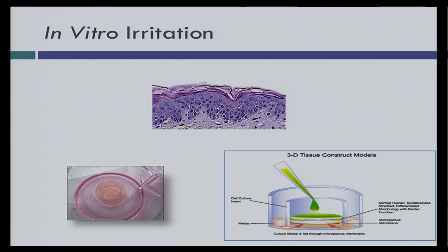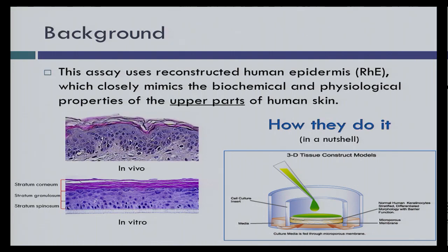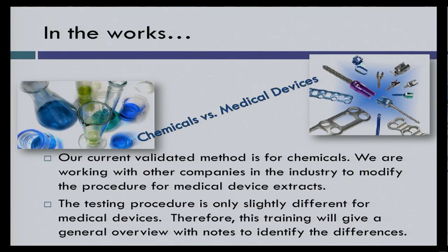The in vitro irritation alternative uses reconstructed human epidermis (RhE) — tissues derived from human skin that mimic the barrier and physiological properties of actual human skin. The current method has been validated by ECVAM (European Centre for the Validation of Alternative Methods) in a two-million-euro validation study for chemicals and cosmetics. We are now working at the ISO 10993 level to extend that validation to medical devices.